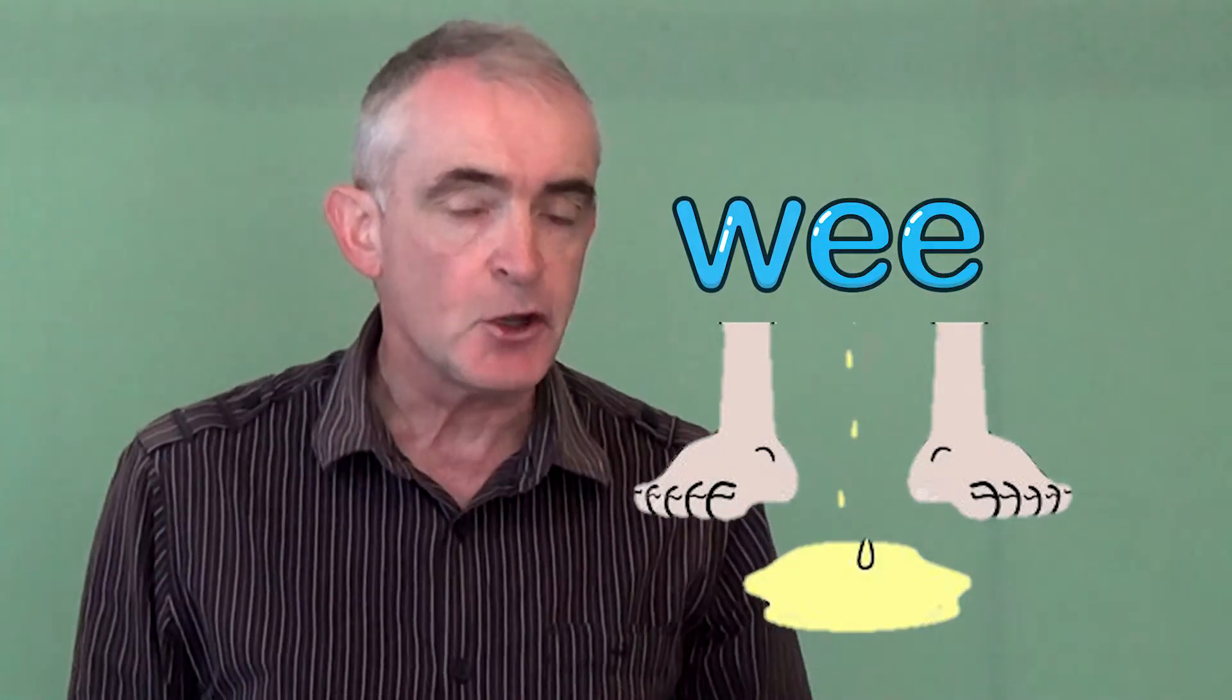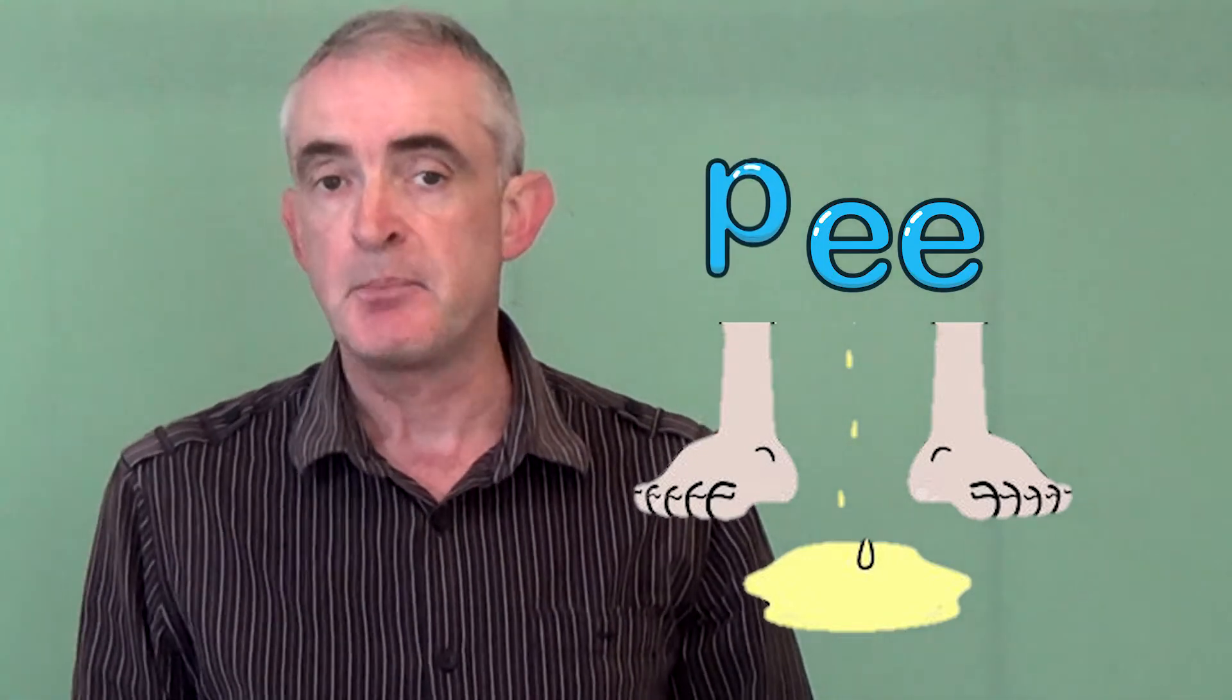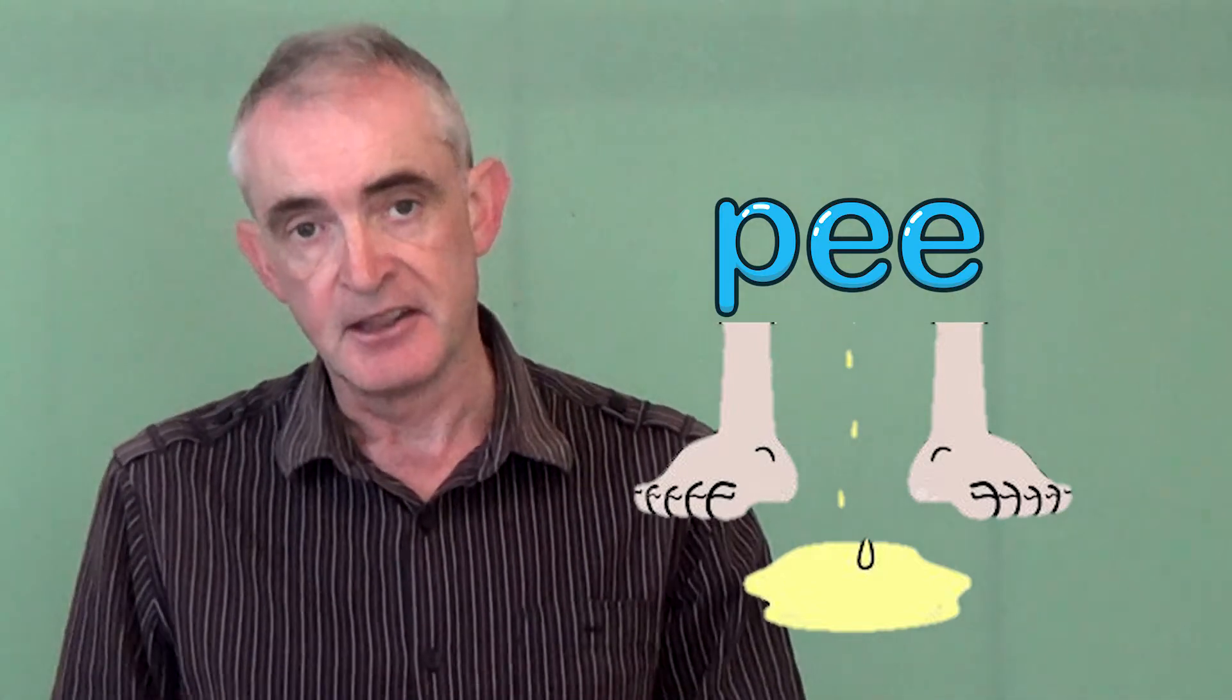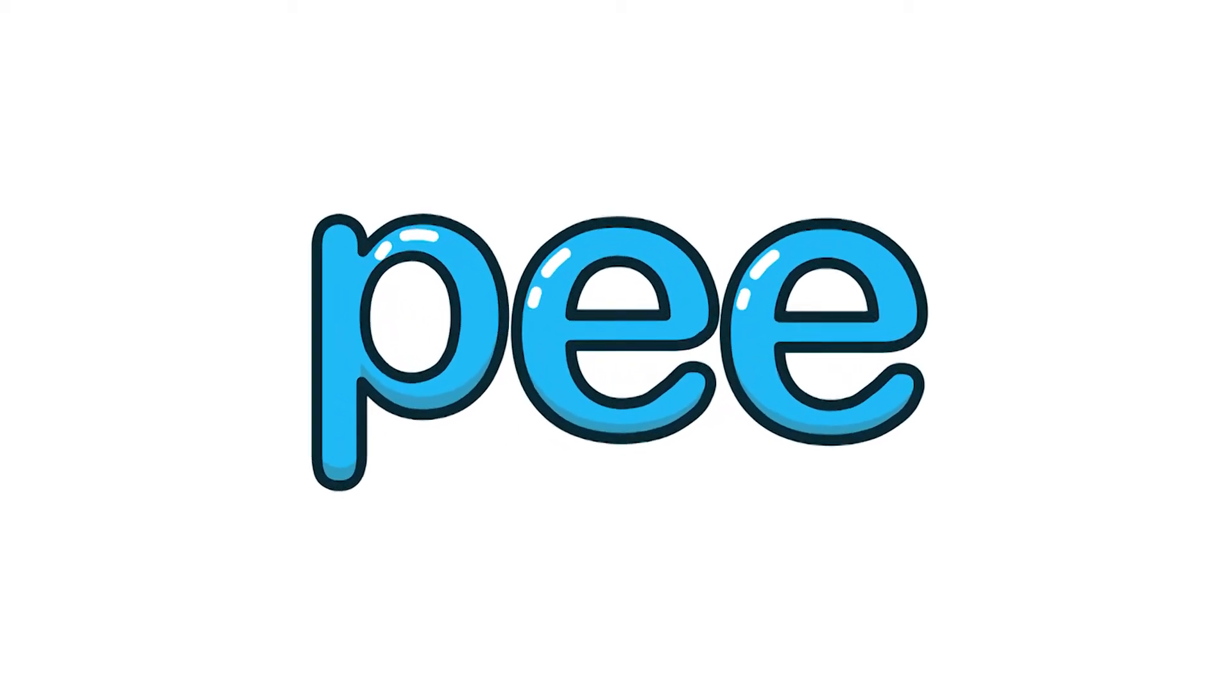As you get older, you drop the W and replace it, for some reason, with the letter P and the word becomes to pee, both as a noun and as a verb. And this word is the most acceptable word in society for this action and this noun. So, if you are in any doubt as to the situation that you are in, use pee either as a verb or as the noun.